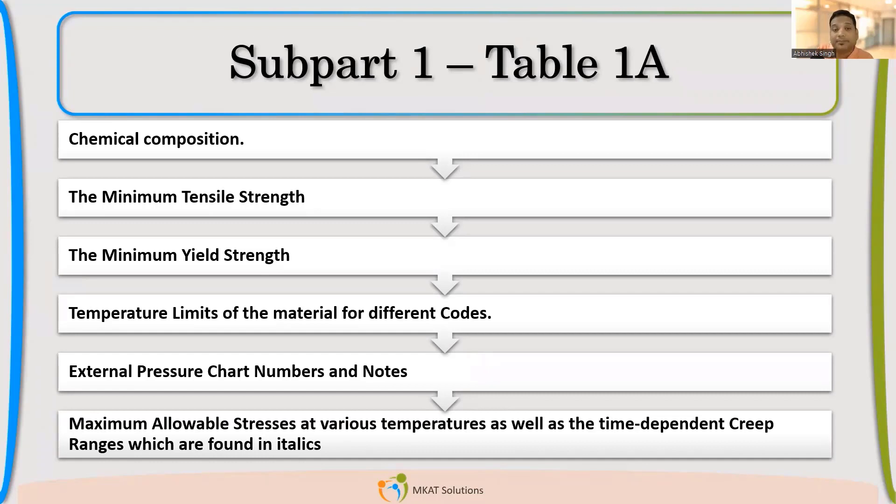We will also see the temperature limit. Each and every code has assigned a maximum temperature limit on which that material can be used. Like if you talk about Section 8 Division 1, SA516 can be used up to 538. If you go into Table 1A, you will find what is the maximum applicable temperature. So for each code, the criteria is different. Same SA516, if you are using in Section 3, the upper limit is only 370. I cannot use beyond 370 degrees Celsius. Same material, but the same material under Section 8 Division 1, I can use up to 538. So that is another difference between the different code and its uses. So that limit also you will find in Section 2 Part D Table 1A.